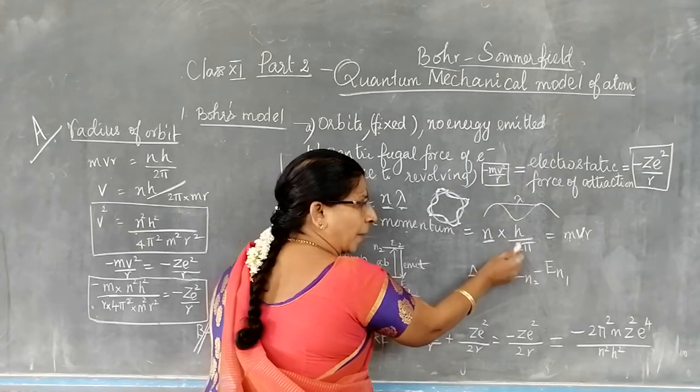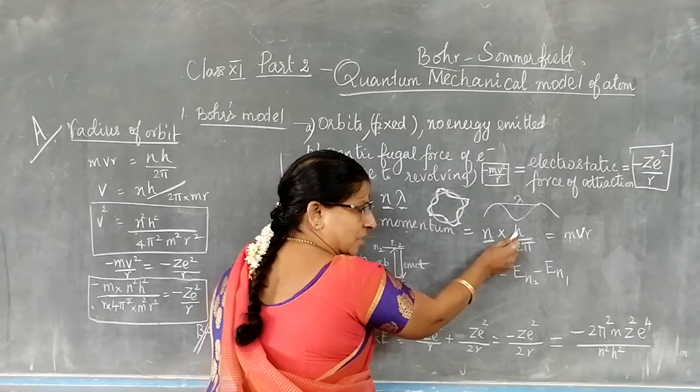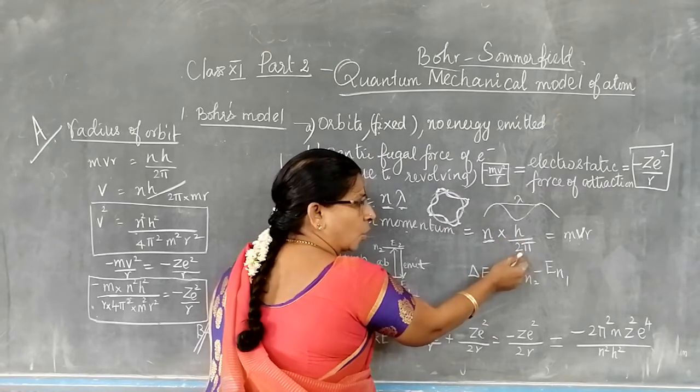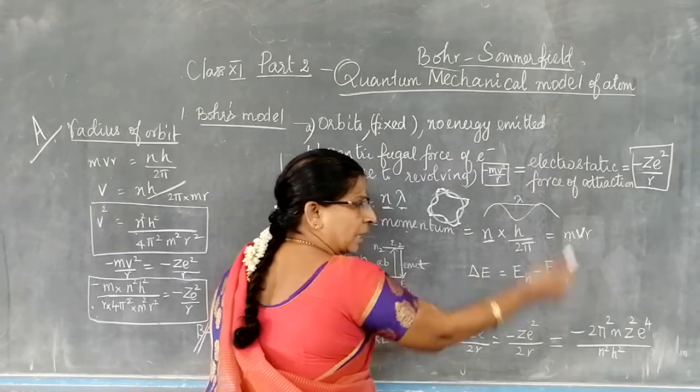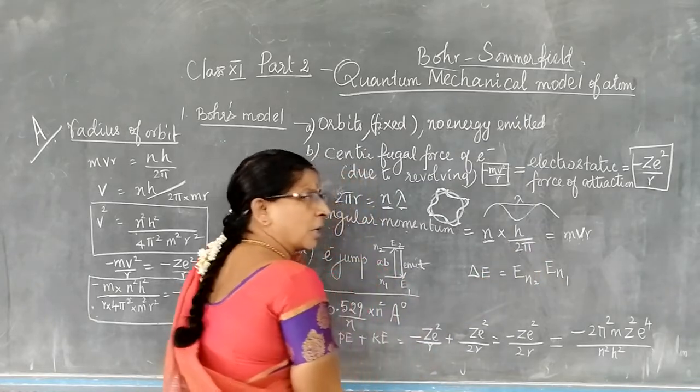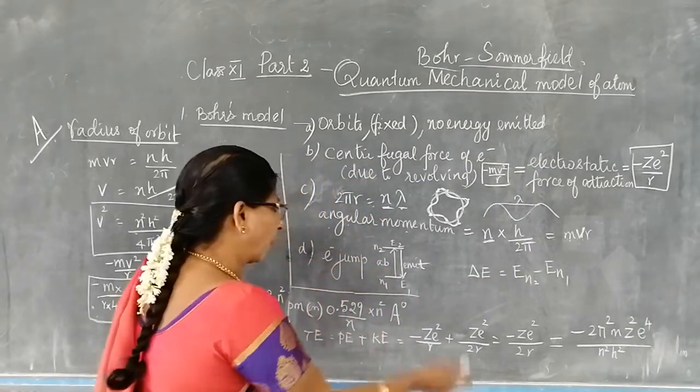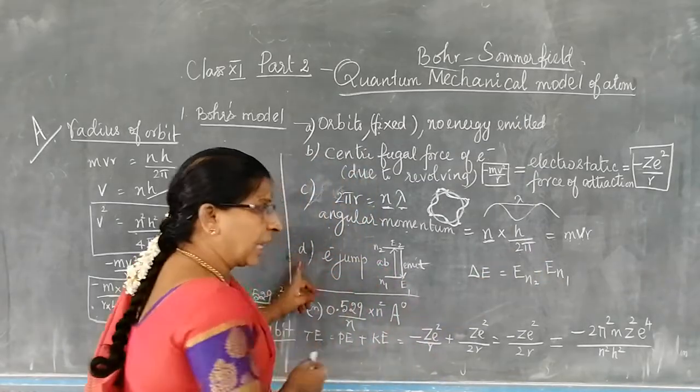H upon 2π, where H is Planck's constant, n is an integer, and pi is 3.14.